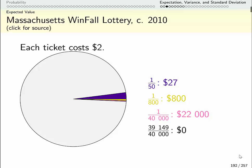So a ticket costs two dollars and you get one of these four prizes. You could get $27 and the odds of that happening are one in 50, you could get $800, you could get $22,000, or you could get no money and most of the time you do get no money. But let's think about what the average ticket would win.